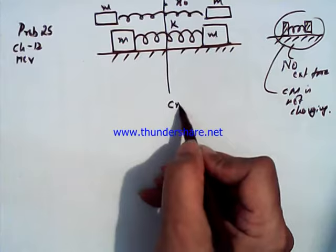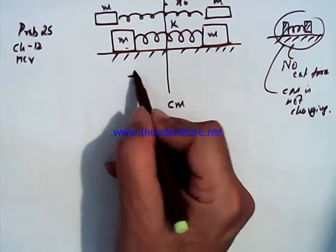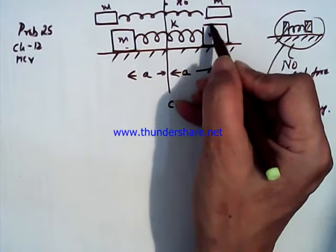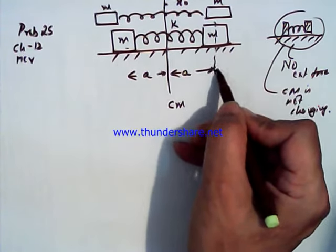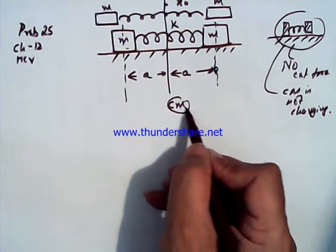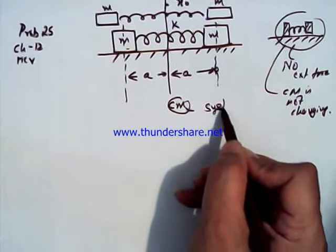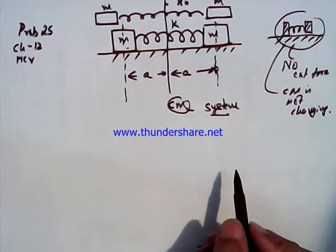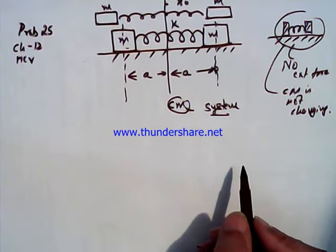there is center of mass here. Since the masses are equal, both the distances will be equal and this is the center of mass of each mass M and M, and this is the center of mass of the system. And let the distance be a. It will be equidistant because of the symmetry.